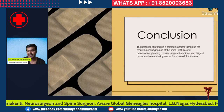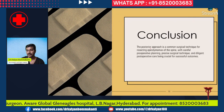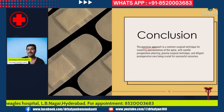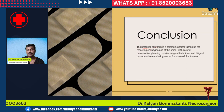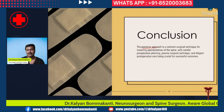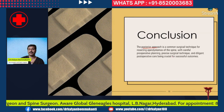In conclusion, among all approaches for spinal cord ependymoma, the posterior approach is the most common surgical technique. With careful preoperative planning, precise surgical technique, and diligent postoperative care, very good outcomes can be achieved — success rates of 70 to 80 percent, and in smaller cases even 90 percent.